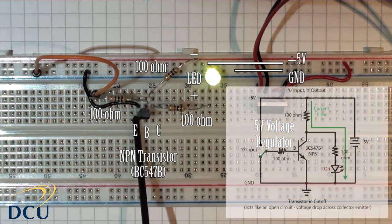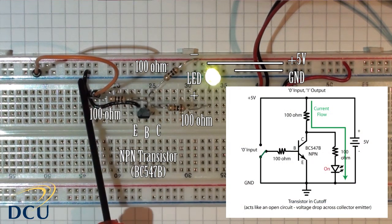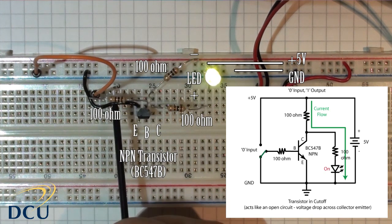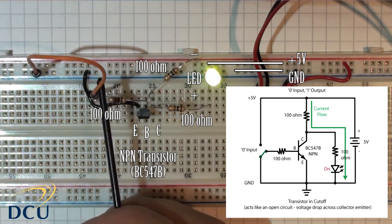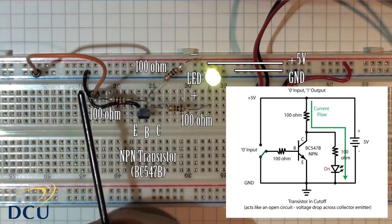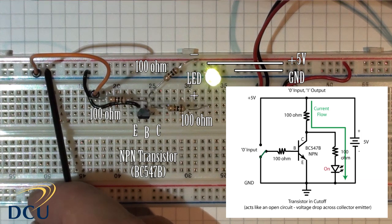In our circuit, the emitter is connected through this black wire to ground, and the base is connected through a 100 ohm resistor to this orange wire that we're using as our switch. The orange wire is currently connected to ground, giving us an input of zero.